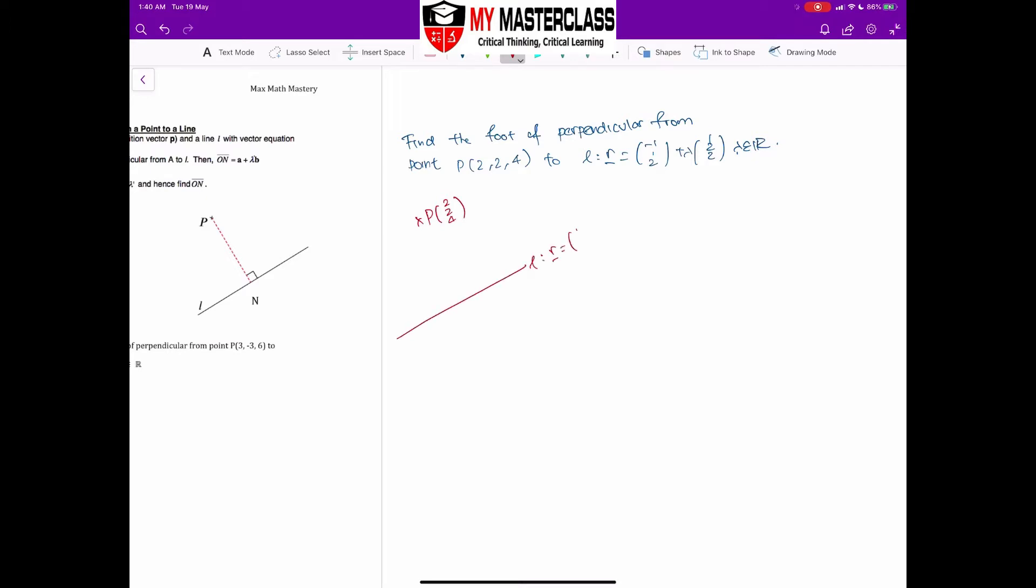r equal to (-1, 1, 2) plus lambda (1, 2, 2), where lambda is real number. Take note, the question did not define my foot of perpendicular, so I have to define my foot of perpendicular. So let's say I'm going to define it as F. Take note, we are looking at PF and we are looking at the unique part of your line which is direction. Essentially you should see that it's a right angle from PF and the line.